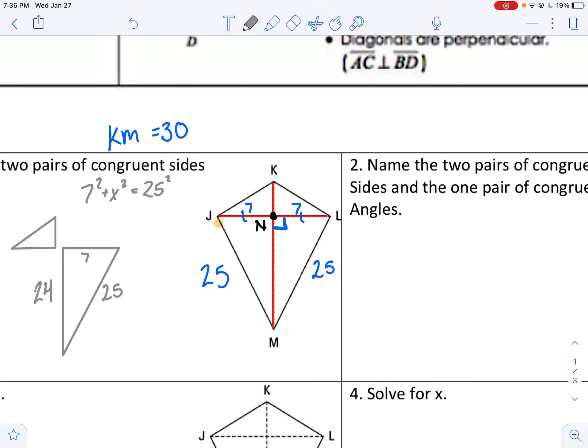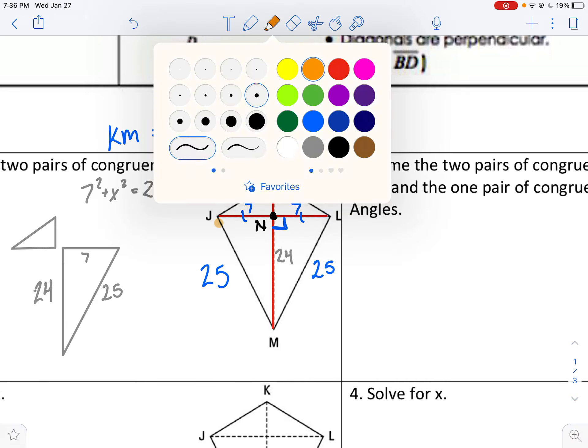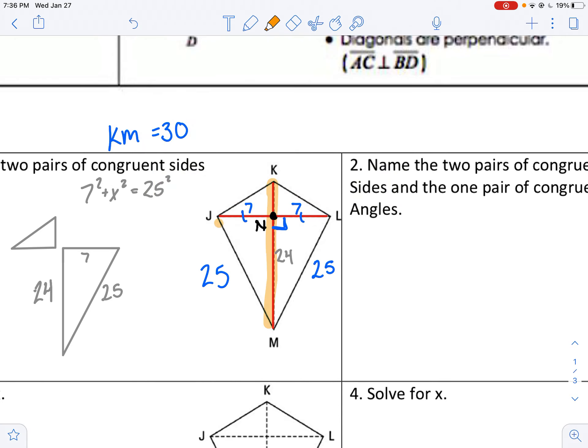So I have a 24 in the middle, and I gave you earlier, if you recall, that this whole segment, KM, was 30. So from there, of course, I could just repeat the process.